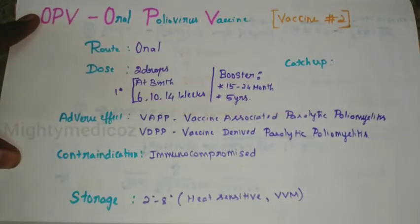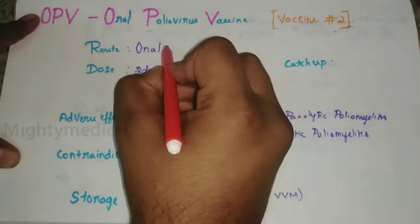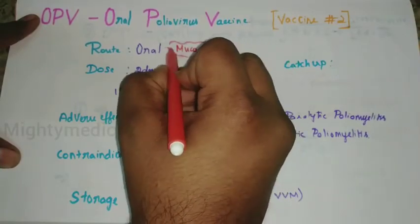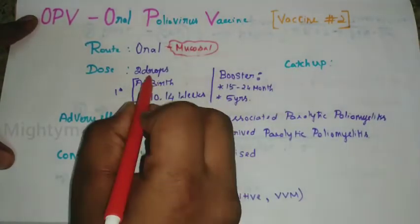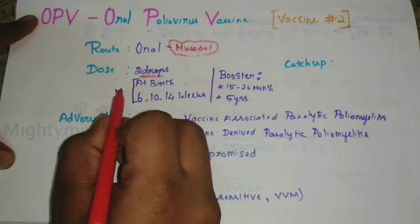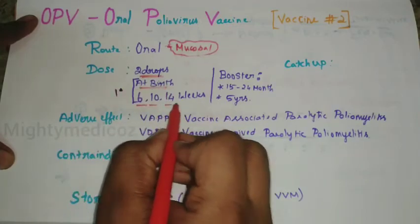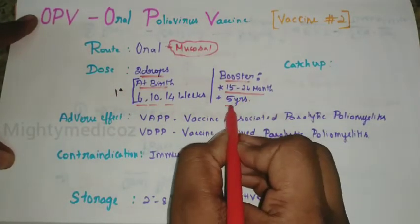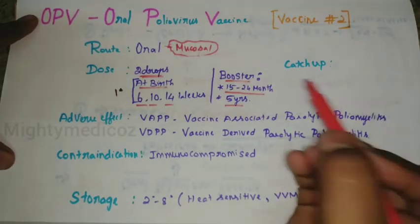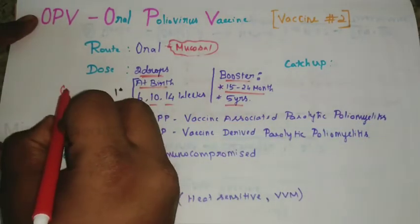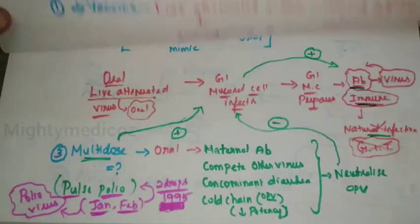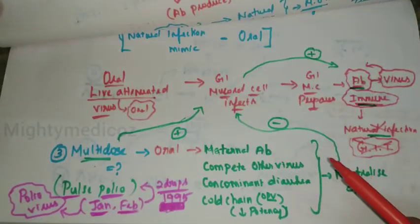The reason for the oral route is mucosal infection immunity. The dose is two drops. Primary immunization is given at birth, then at 6, 10, and 14 weeks, with booster doses at 15 to 24 months and at 5 years. The reasons for multidose are four factors: maternal antibodies, competition with other viruses, concomitant diarrhea, and cold chain maintenance.